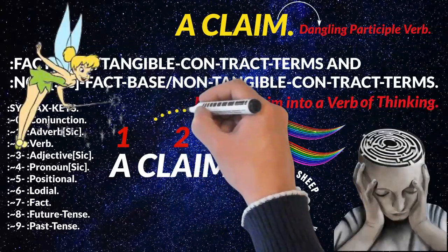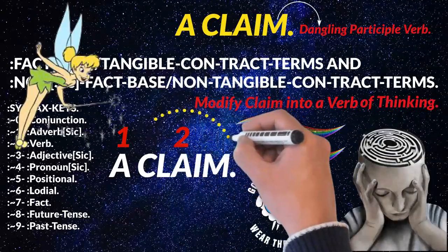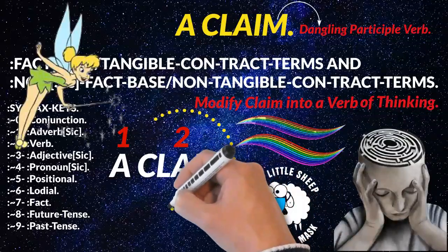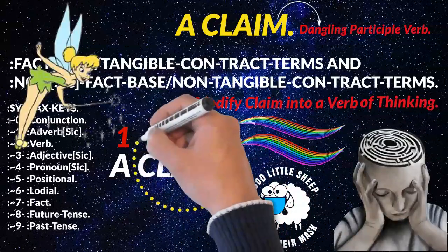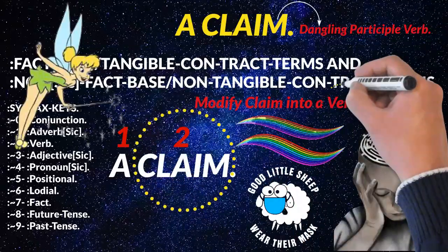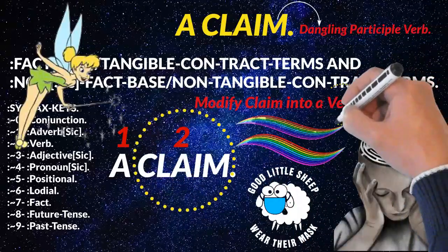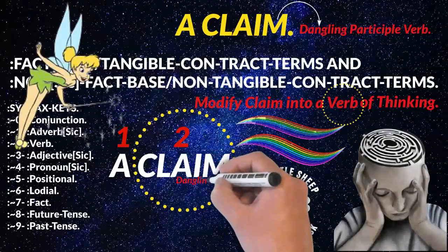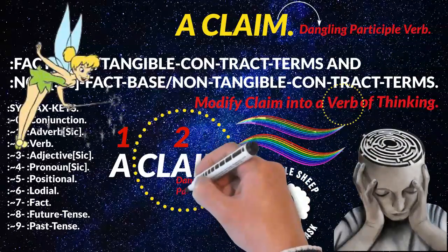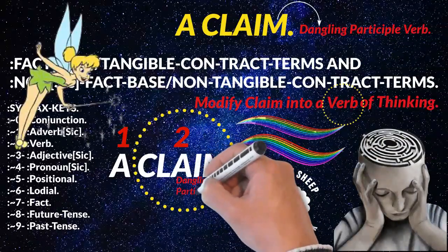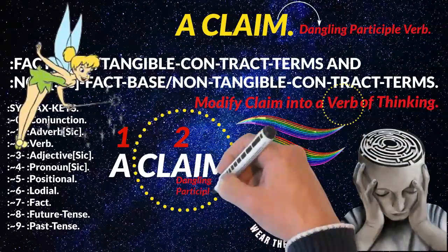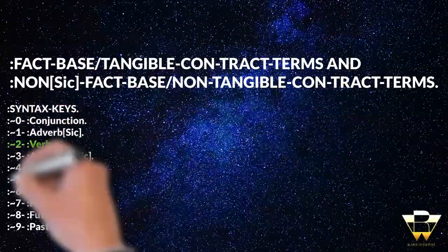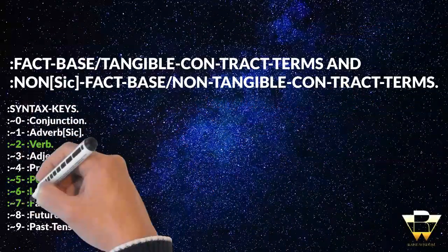Now the verb of thinking is a claim of what? There's nothing there. Therefore it is a dangling participle verb — it's a verb that's dangling there with no closure. Now you could make a correct sentence structure for 'a claim of the facts.'